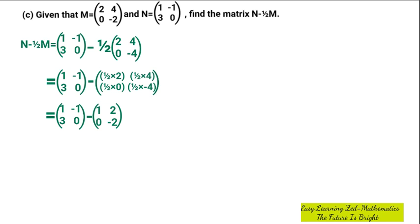Now I can subtract. When subtracting matrices, you subtract corresponding elements. So: 1 minus 1, negative 1 minus 2, 3 minus 0, and 0 minus negative 2.